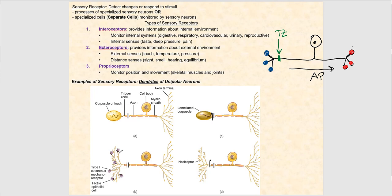The second type of sensory receptors are what we call exteroceptors. They provide information about the external environment — for example, external senses such as touch, temperature, pain, and pressure. We also have distance senses, for example sight, smell, hearing, and equilibrium.